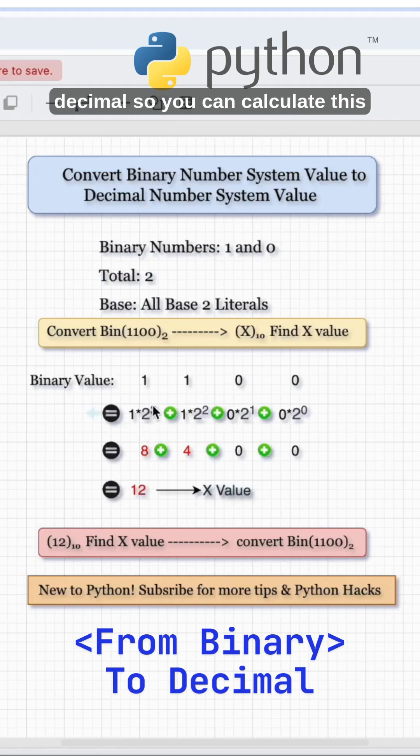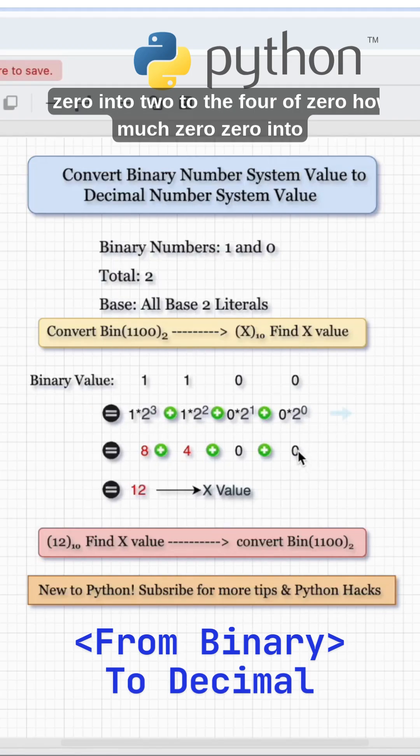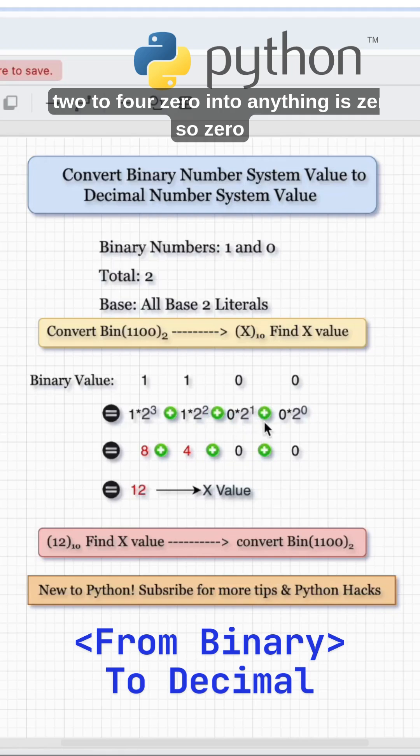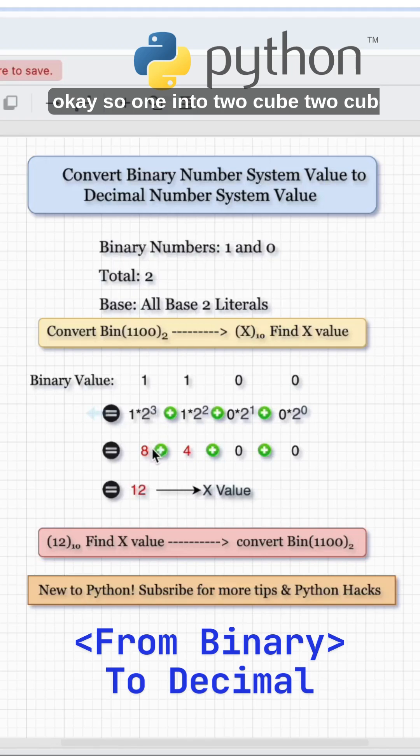You can calculate: 0 into 2 to the power of 0 is 0, 0 into anything is 0. 1 into 2 squared - 2 squared means 4. 1 into 2 cubed - 2 cubed is 8. So 8 plus 4 equals 12. This is the decimal value.